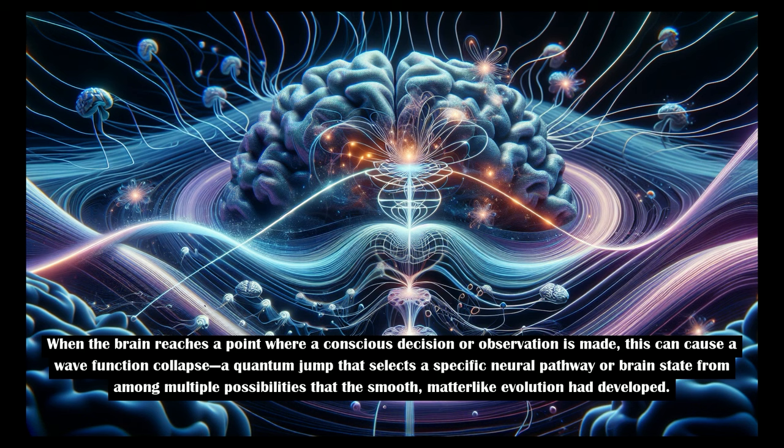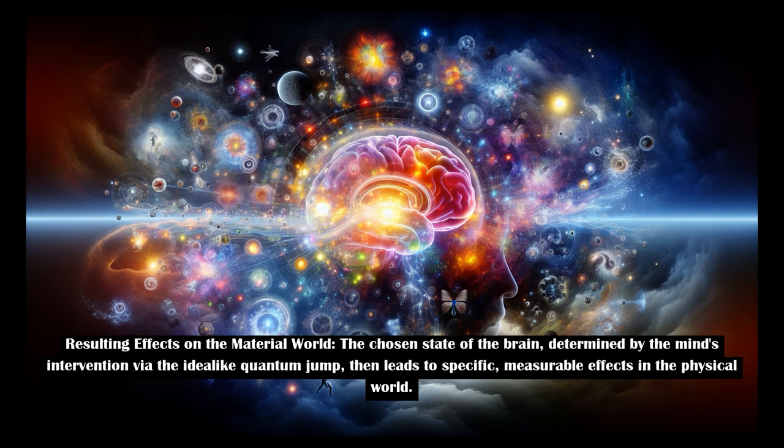When the brain reaches a point where a conscious decision or observation is made, this can cause a wave function collapse, a quantum jump that selects a specific neural pathway or brain state from among multiple possibilities that the smooth, matter-like evolution had developed.